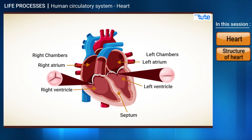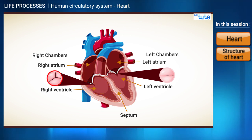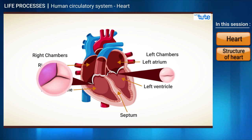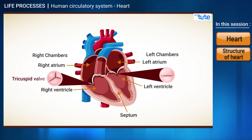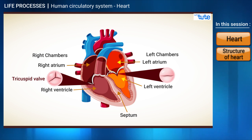The tricuspid valve is present between the right atrium and the right ventricle. These valves are thin flaps of tissue called cusps. If you carefully observe the image, there are three cusps here — hence the name tricuspid valve. The valve present between the left atrium and the left ventricle is called the mitral valve.